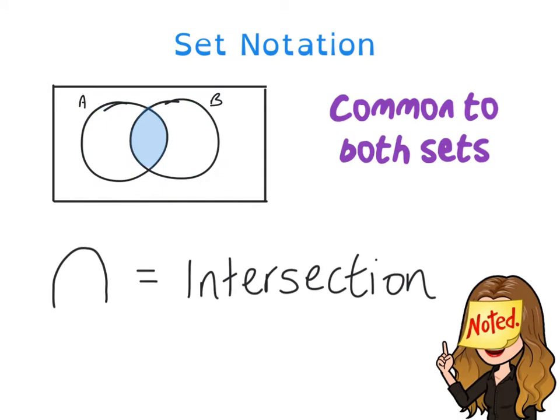The intersection, then, is what's common to both sets. So this part in the middle. N means intersection.